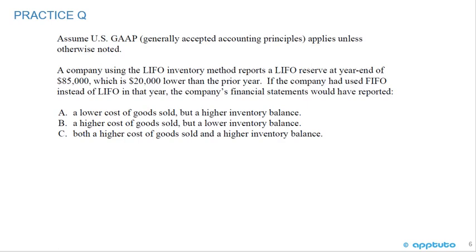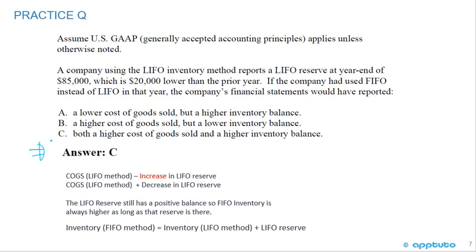A company using the LIFO inventory method reports a LIFO reserve at year end of $85,000, which is $20,000 lower than the prior year. If the company had used FIFO instead of LIFO, its financial statements would have reported: A) a lower cost of goods sold but a higher inventory balance, B) a higher cost of goods sold but a lower inventory balance, or C) both a higher cost of goods sold and a higher inventory balance. The correct answer is C. The reserve was lower — that's LIFO liquidation. Normally we adjust FIFO cost of goods sold as LIFO cost of goods sold minus the increase in the reserve, but here the change is a decrease of $20,000, so we add it: LIFO cost of goods sold plus the decrease in the LIFO reserve. So cost of goods sold is higher, not lower.